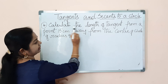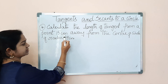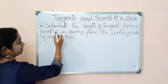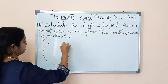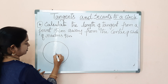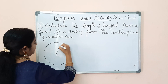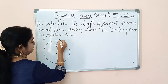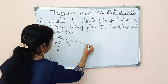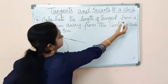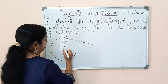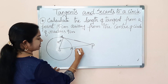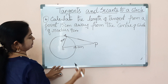Let's see one problem from the same exercise: Calculate the length of the tangent from a point 15 centimeters away from the center of a circle of radius 9 centimeters. We need to find the length of the tangent. Let us draw the circle with radius given as 9 centimeters. Let's name the point of contact A and draw a tangent. The external point is 15 centimeters away from the center.